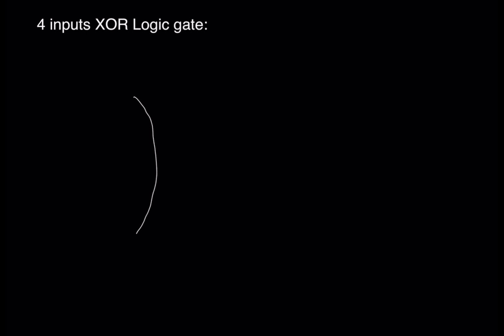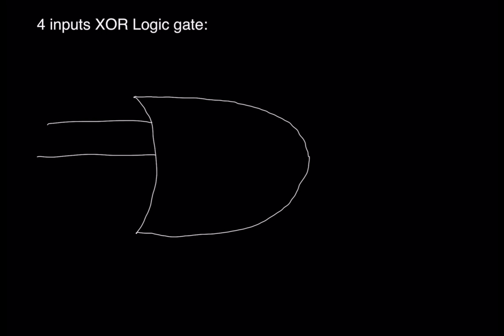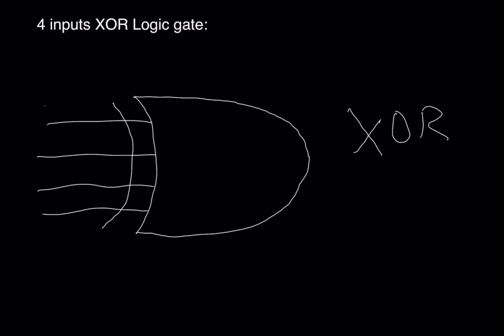Hello guys, in this video we'll be talking about the four-input XOR logic gate — that means we will have four inputs coming into the XOR logic gate. It will be input one, input two, input three, input four, and with the exclusive symbol it's an exclusively OR gate with four inputs and one output. Hang around guys, this video will explain the truth table for this logic symbol and the boolean expression.